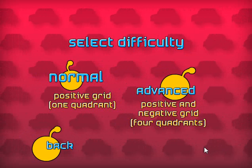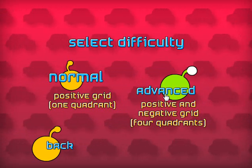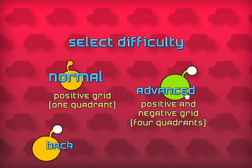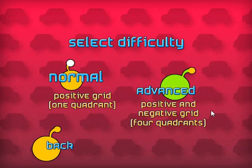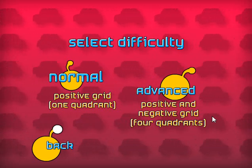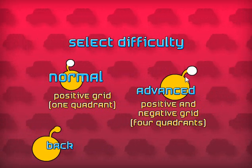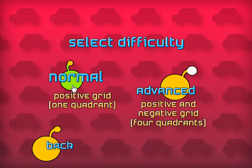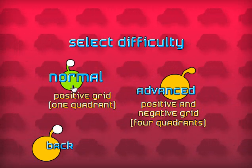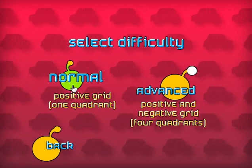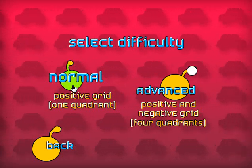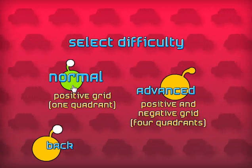Let's go ahead and click the play button and you're given the option to play the advanced or normal game. The advanced game has all four quadrants. The normal game has quadrant one, which has all positive x and y values. Let's go ahead and play the normal game and you'll get to see how to play.